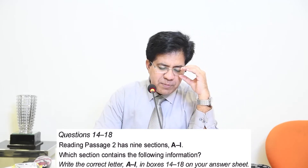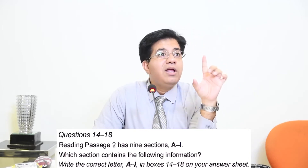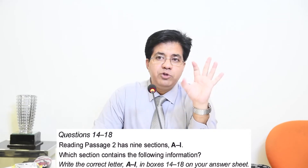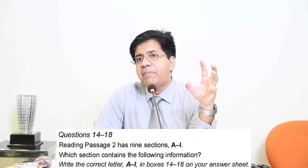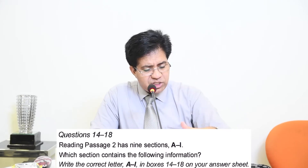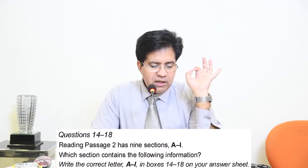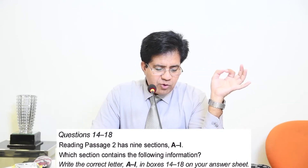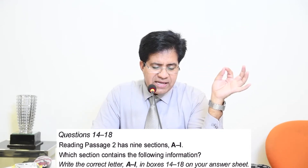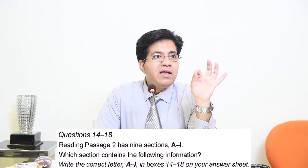Questions 14 to 16: Which paragraph contains the following information? One thing you can do is read questions 14 to 18 and underline the words. For example, question number 14: '19th century.' Question number 15: 'Tall building and prestige' — like the Eiffel Tower being very tall shows the prestige of the French people. Question 16: 'comparison between circulation' — so comparison and 19th century circulation.